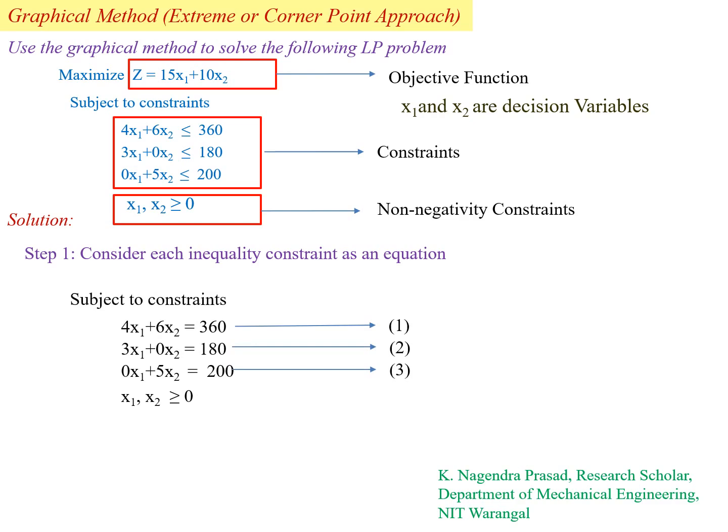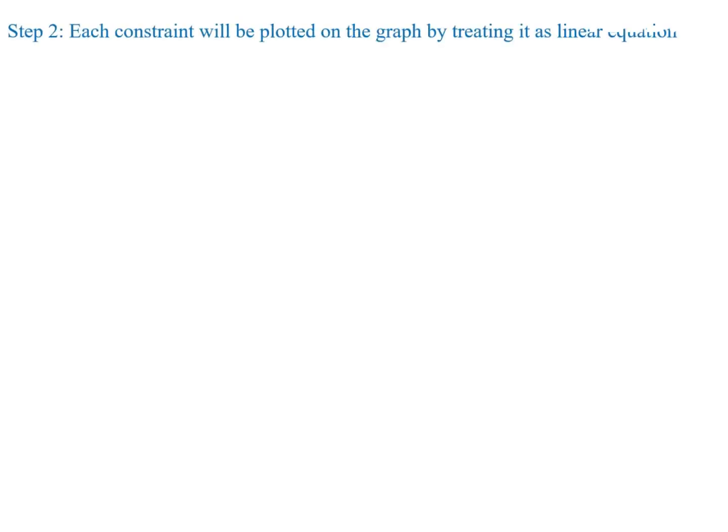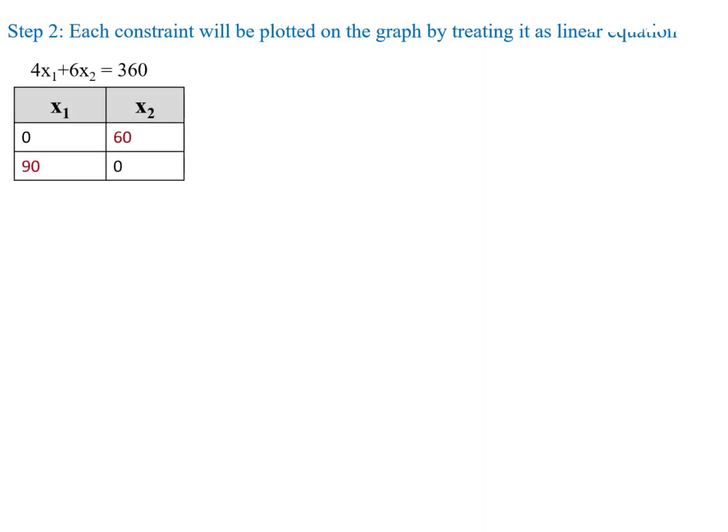3x1 plus 0x2 equal to 180; 0x1 plus 5x2 equal to 200; and x1, x2 ≥ 0. Step two: each constraint will be plotted on the graph by treating it as a linear equation. For this, first determine the coordinates for each constraint equation.